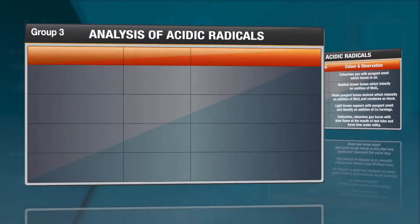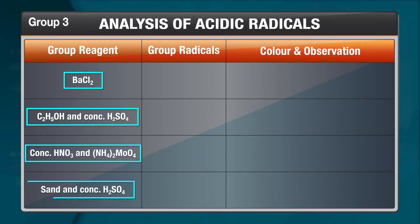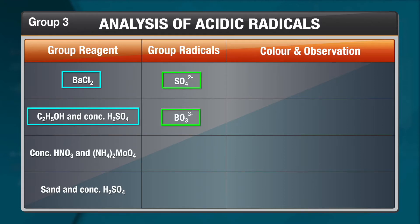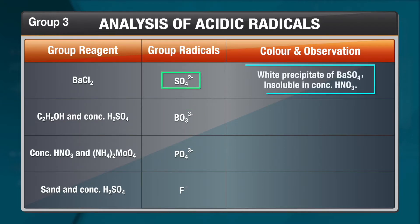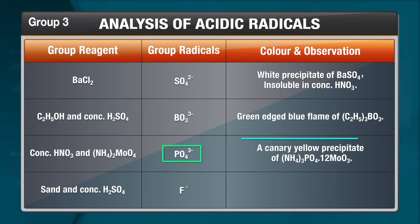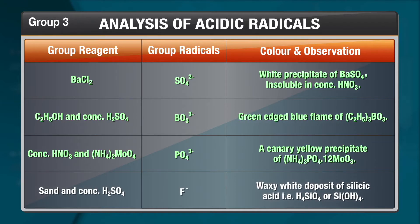Now let us talk about group 3. The reagents will be barium chloride for sulfate ion; ethanol and concentrated H2SO4 for borate; concentrated HNO3 and ammonium molybdate for phosphate; and sand and concentrated H2SO4 for fluoride. For sulfate, we get a white precipitate of BaSO4 insoluble in concentrated HNO3. For borate, a green-edged blue flame of triethylborate. For phosphate, a canary yellow precipitate of ammonium phosphomolybdate. For fluoride, a waxy white deposit of silicic acid — H4SiO4.